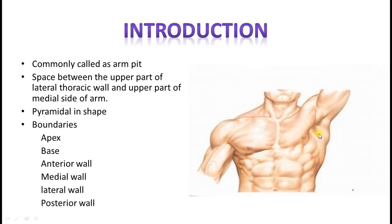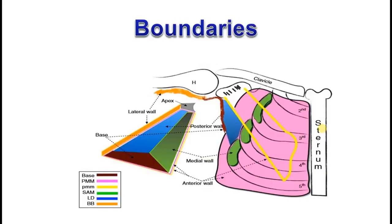The boundaries are: apex, base, anterior wall, posterior wall, medial wall, and lateral wall. Here you can see a schematic diagram of the axilla. As I told you, it is pyramidal in shape, present between the lateral wall of the thorax and the upper part of the medial side of your arm. This is the base of the axilla, and the color code is given here. This is the medial wall of the axilla, formed by the serratus anterior muscle.